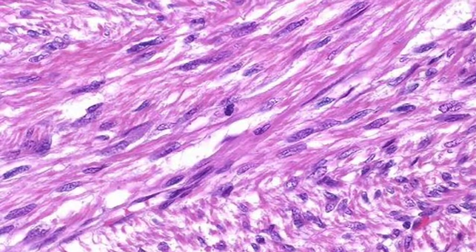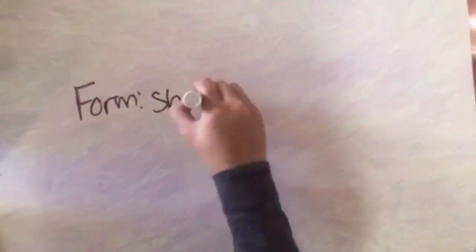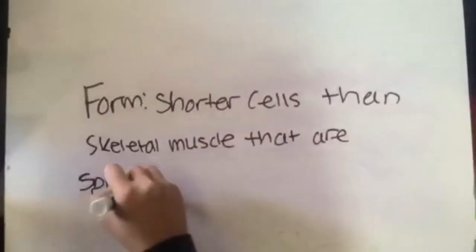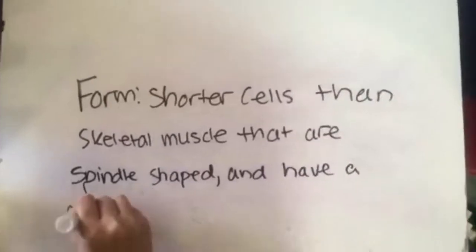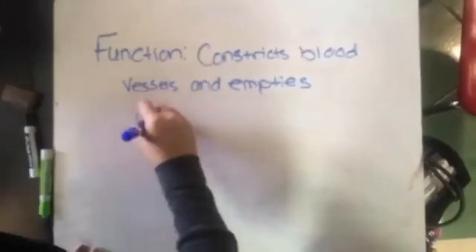Smooth muscle. Its cells are shorter than skeletal muscle and are spindle shaped and contain a centrally located nucleus. Smooth muscle is meant to constrict blood vessels and empty the urinary bladder.